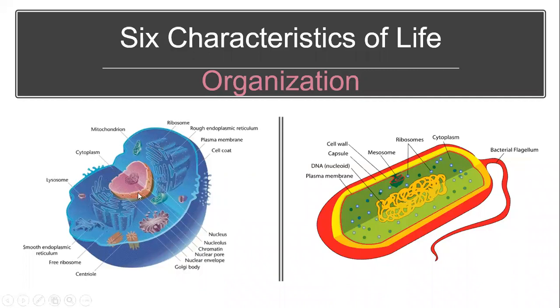For example, this center nucleus in the cell contains the DNA or genetic material of the cell. This is the brain of the cell. It controls the cell and tells the cell what to do.